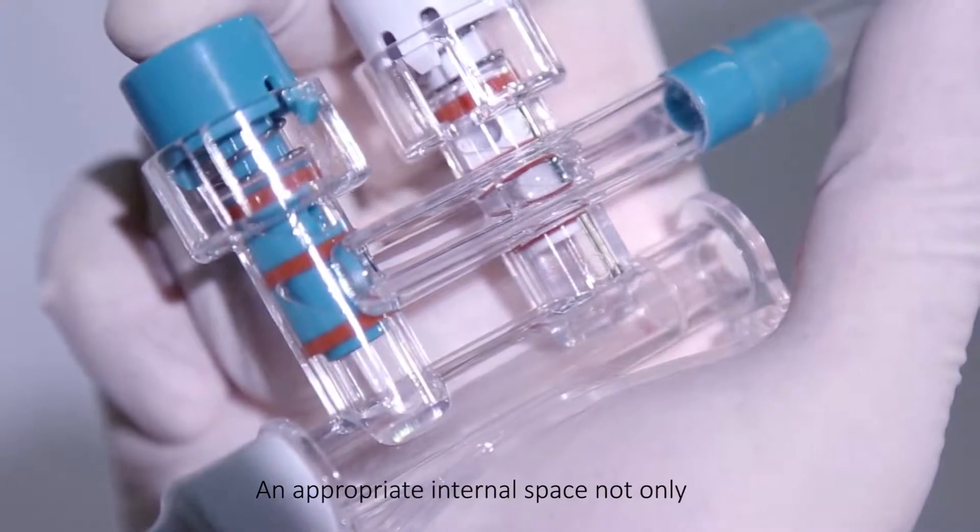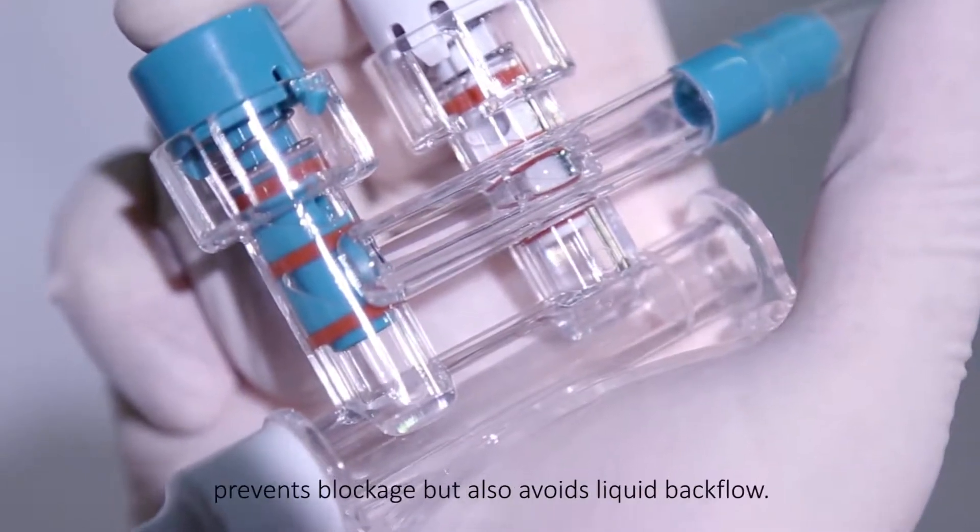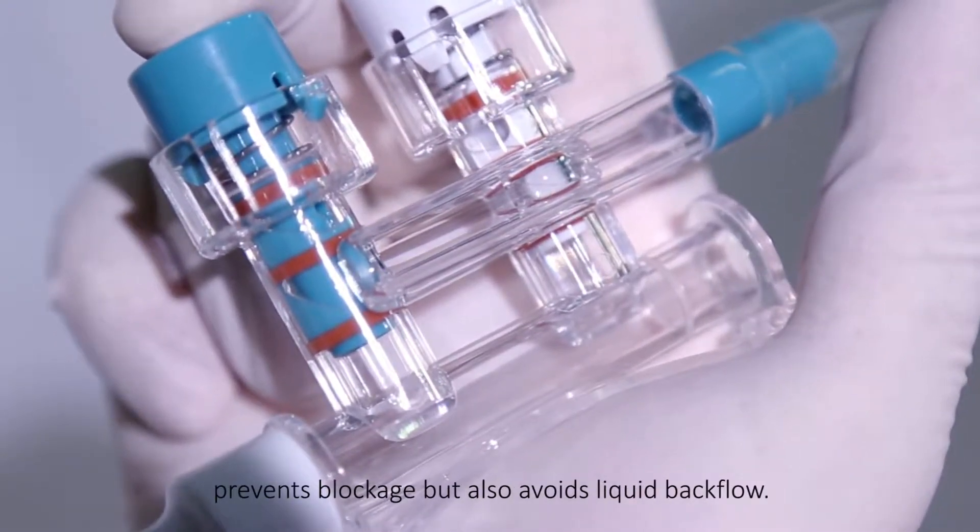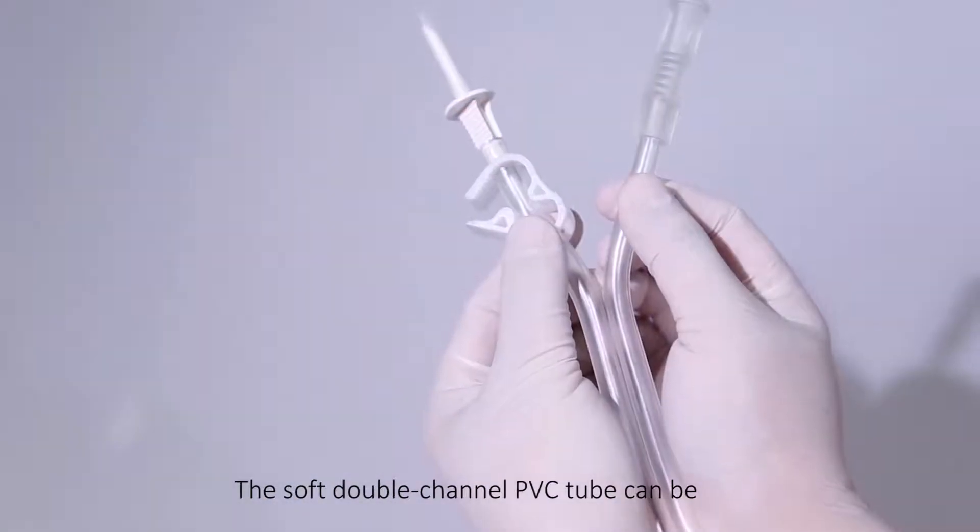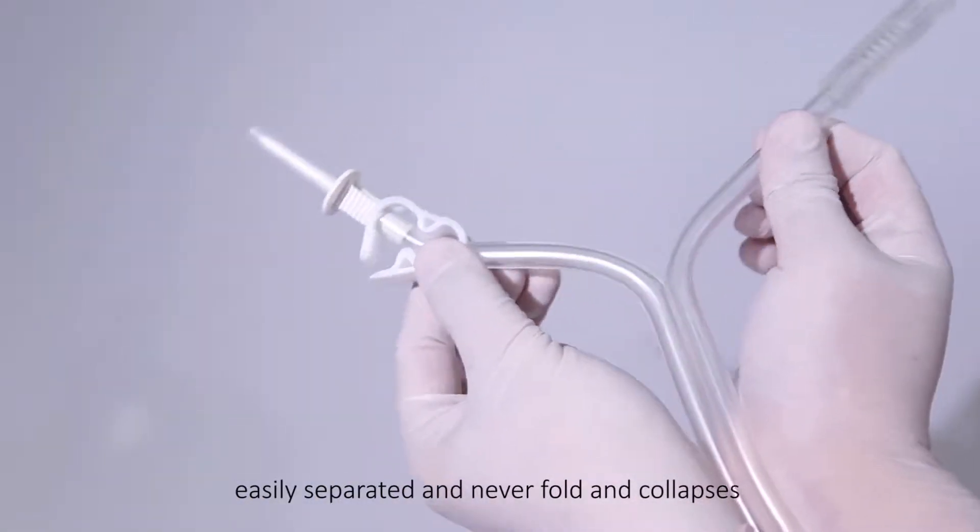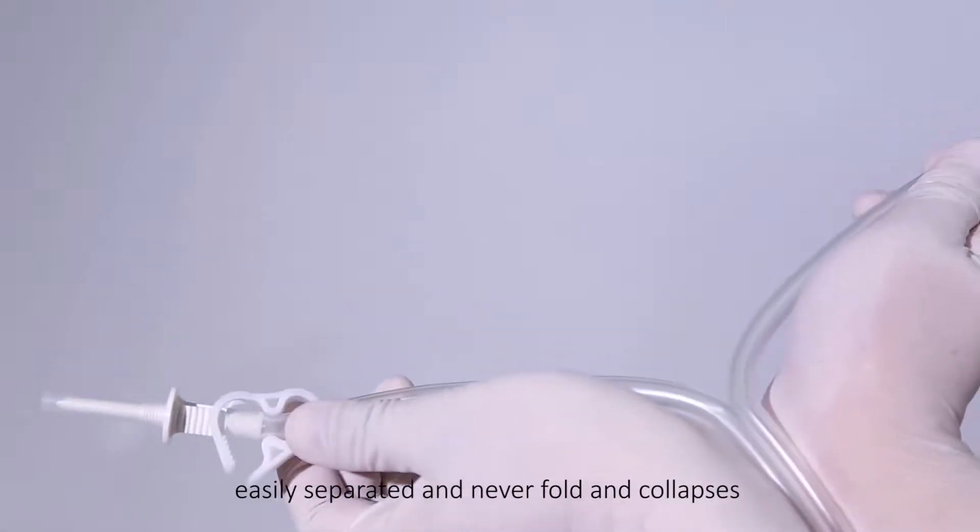An appropriate internal space not only prevents blockage, but also avoids liquid backflow. The soft double-channel PVC tube can easily be separated and never folds or collapses.